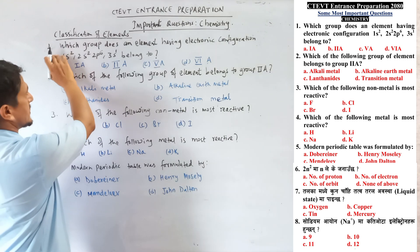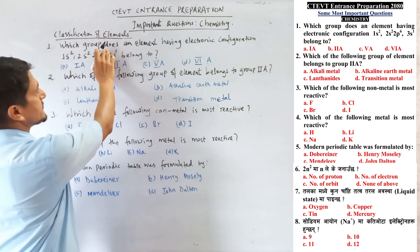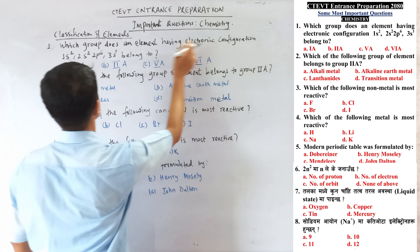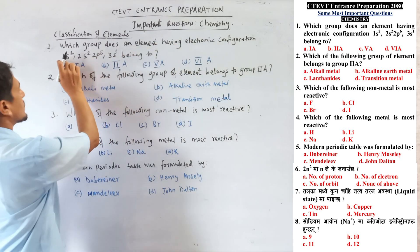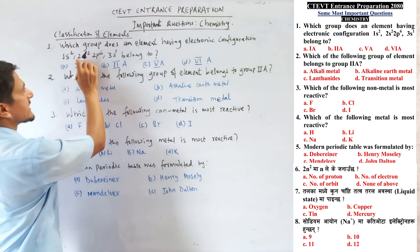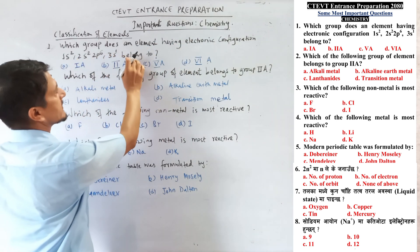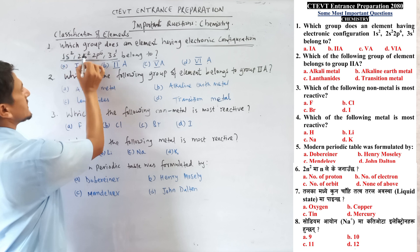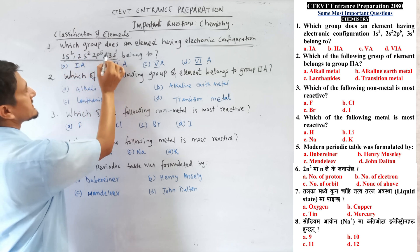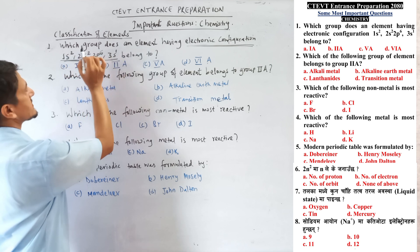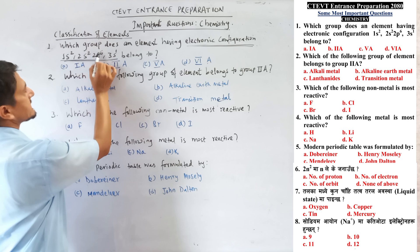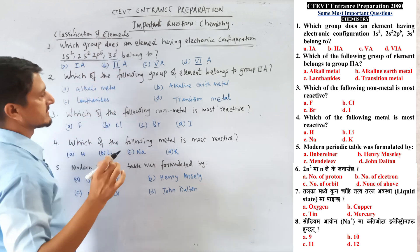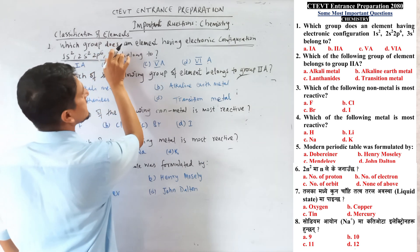Question number 1: Which group does an element having electronic configuration 1s2, 2s2, 2p6, 3s1 belong to? The electron distribution gives 2, 4, 8, 6, 10, 1 — total atomic number 11.